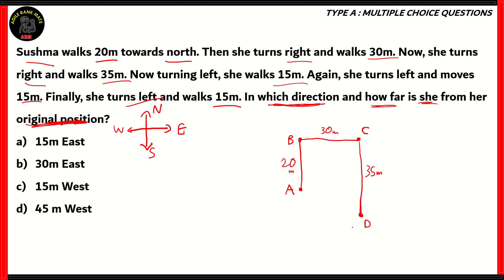From here onwards, she's turning left. So, she moves this way. And now, she walks 15 meters. So, from D to E, she walks 15 meters. Then from E to F, she walks 15 meters. Finally, she turns left and walks 15 meters towards the point G. So, basically, D, E, F, G is a square of side 15 meters.